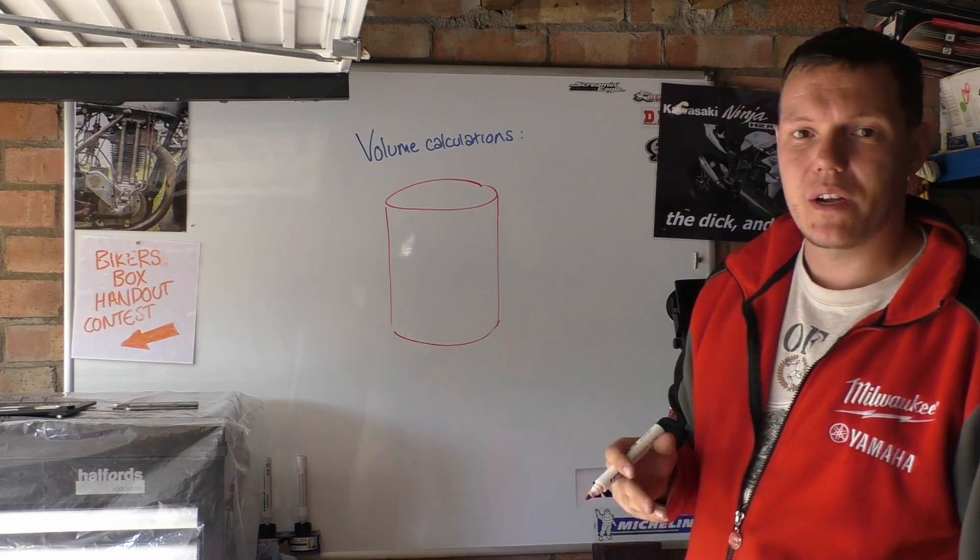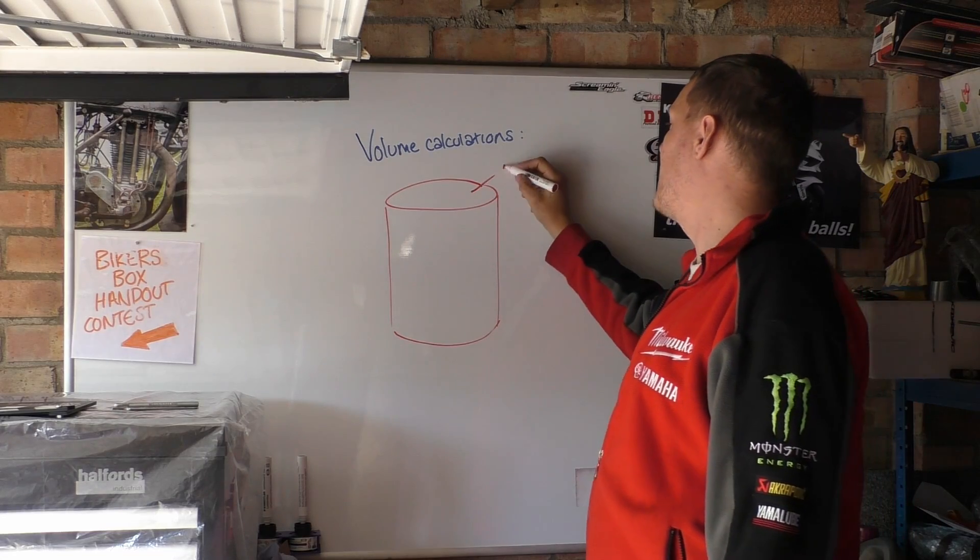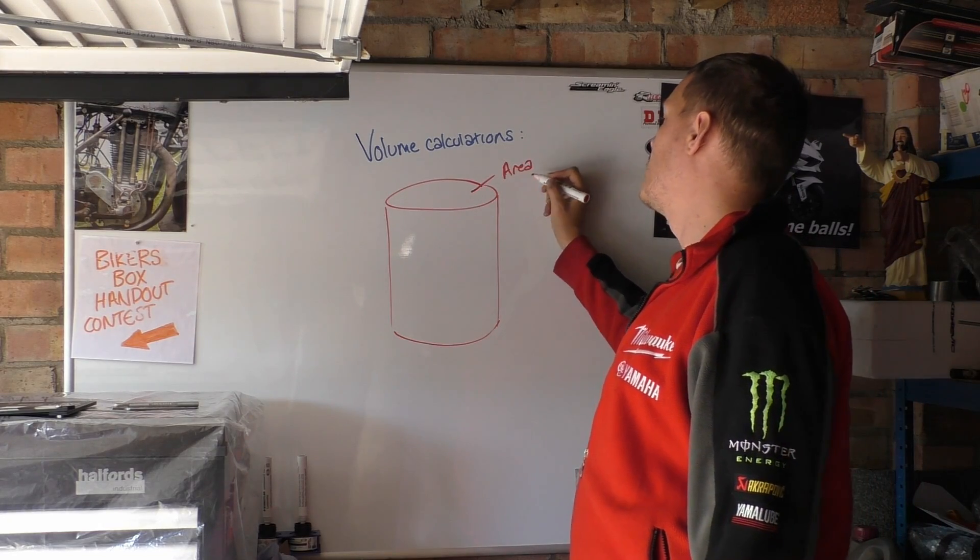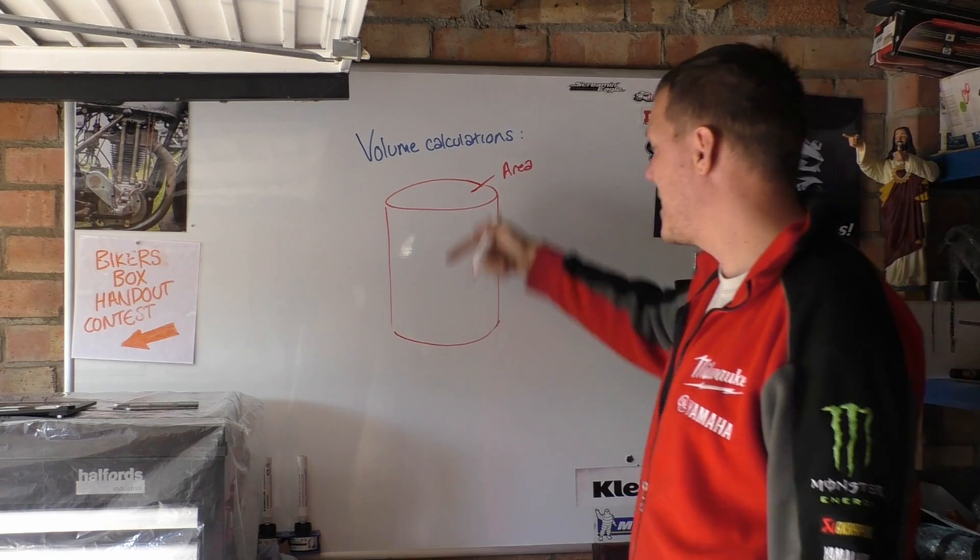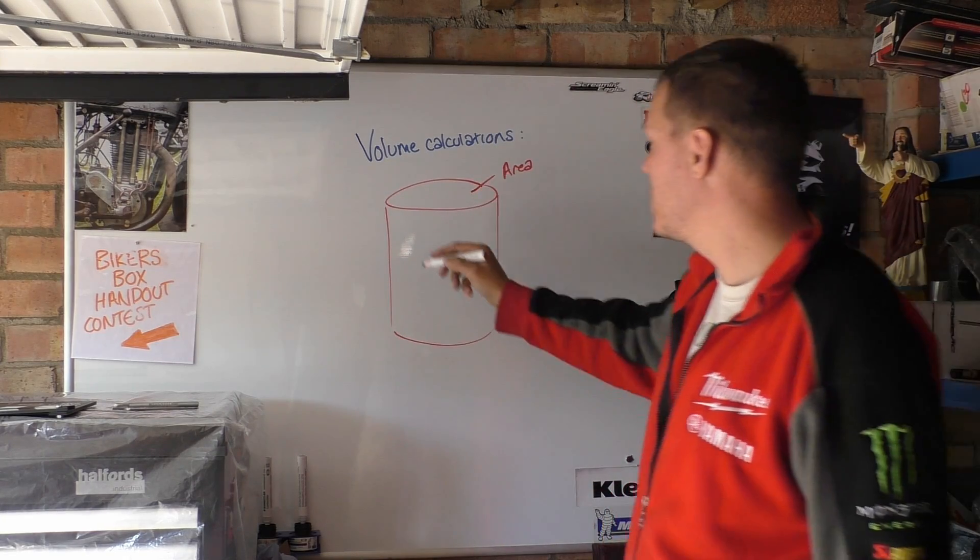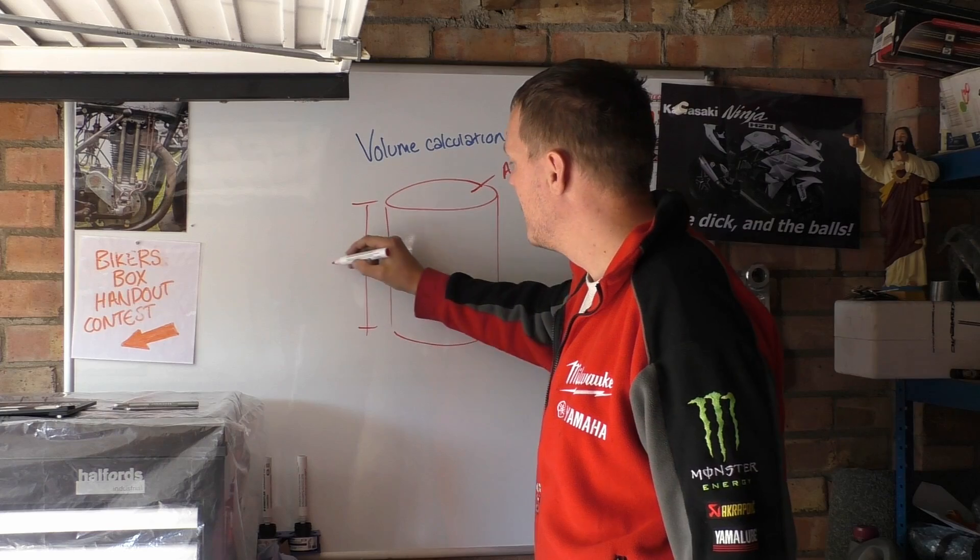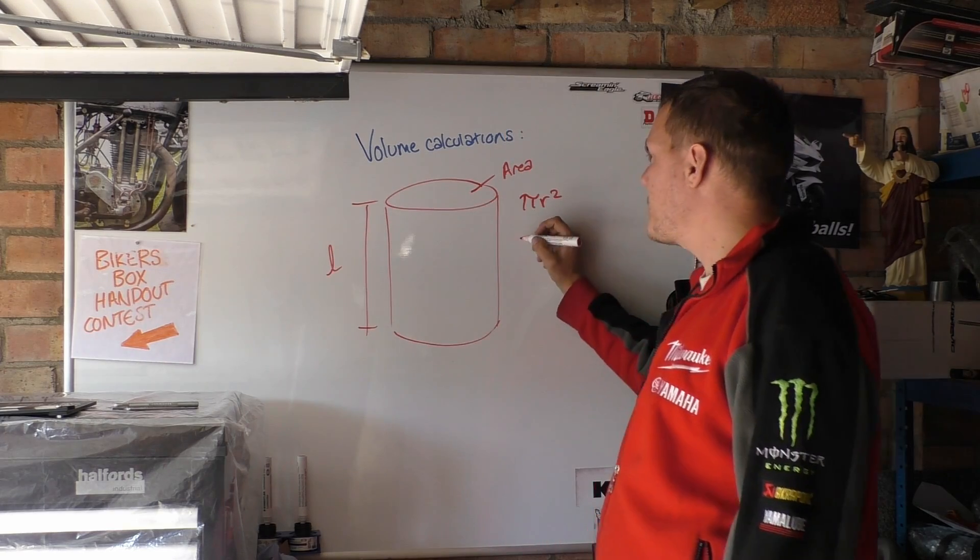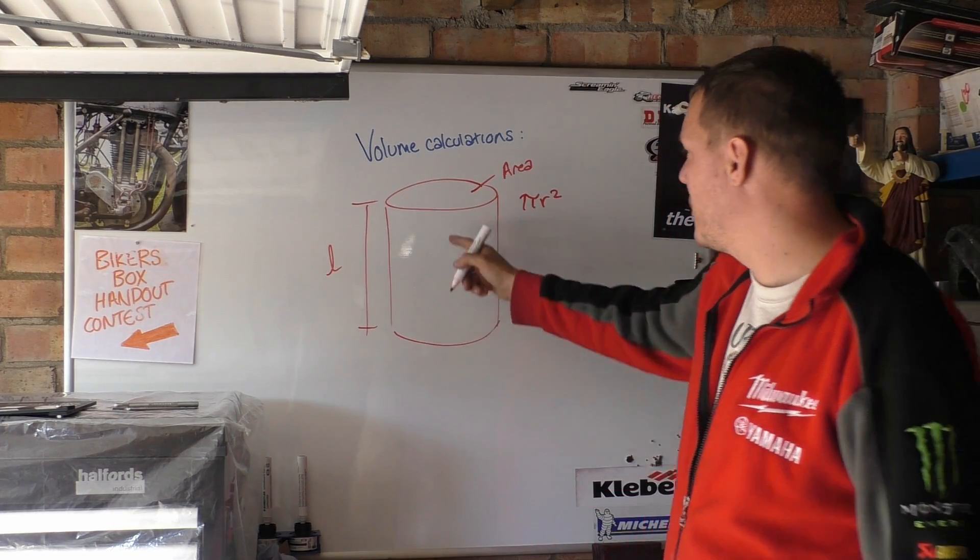So what we need to do is we need to work out a volume. A volume is the area, so how big your circle is and how many of these circles go down basically. So you need a length as well. Now what do you need for your area?